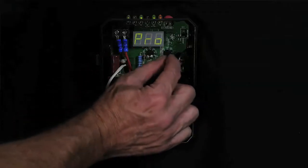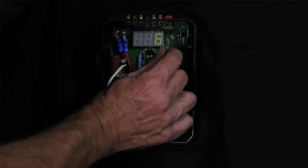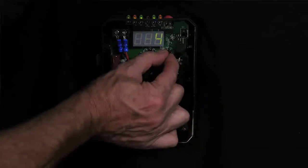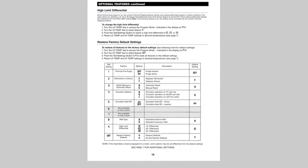Next, use the high temp dial to select the programming option you want to change. Each program option is assigned a number. Refer to the installation and operating manual for a list of options and the corresponding number.